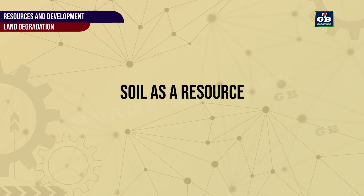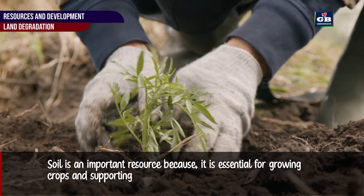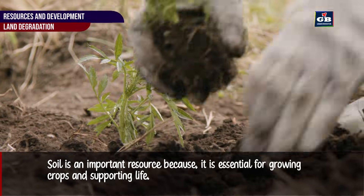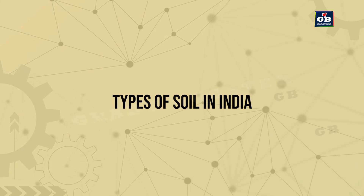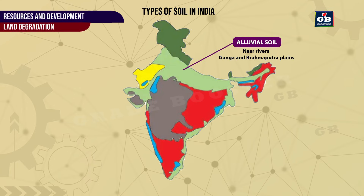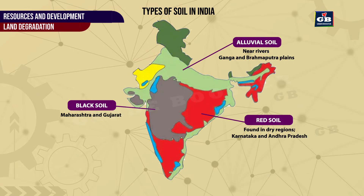Soil as a resource. Soil is an important resource because it is essential for growing crops and supporting life. Types of soil in India: 1. Alluvial soil — found near rivers and very fertile. Example: soil in Ganga and Brahmaputra plains. 2. Black soil — best for growing cotton, found in Maharashtra and Gujarat. 3. Red soil — found in dry regions and needs more fertilizers. Example: soils of Karnataka and Andhra Pradesh.